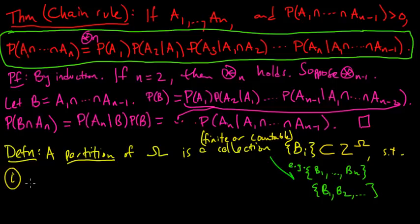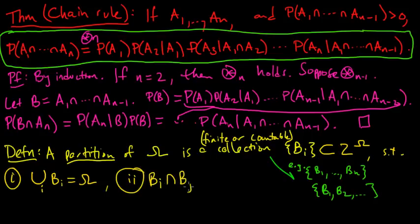So a partition is a collection of sets bi, with each of them contained in omega, or I could write a subset of the power set, such that: one, the union of all bi equals omega, and two, the intersection of bi with bj is the empty set whenever i is not equal to j. So this is saying they are pairwise disjoint.